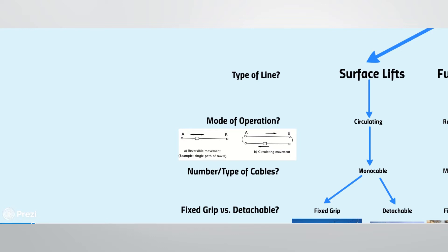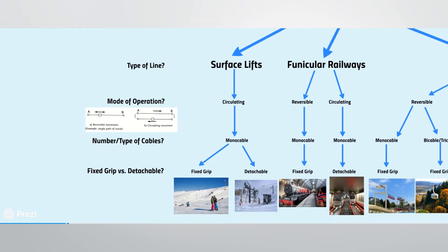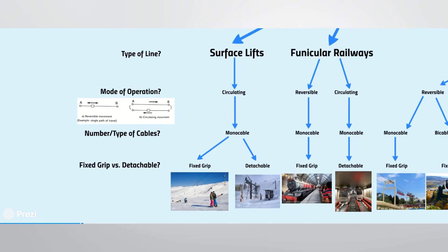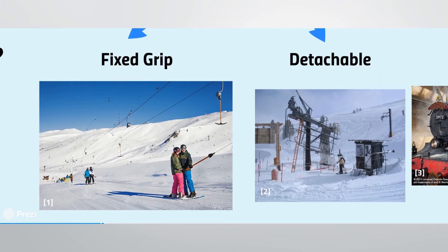Lastly, fixed grip versus detachable covers whether the carriers are permanently attached to the haul rope, or if they detach from the haul rope in the terminals to slow for loading and unloading. Now we can define some ropeways. Surface lifts are typically used in winter operations, where the ropeway pulls a rider upwards along the snow. These lifts are circulating and mono cable. Most common are fixed grip surface lifts, which include platter lifts and J-bars for one rider, and T-bar lifts for two riders, as shown in the image on the left.